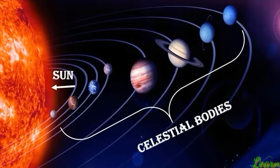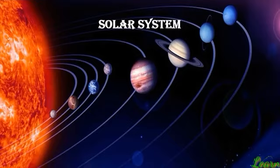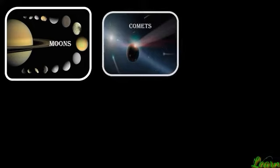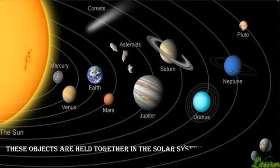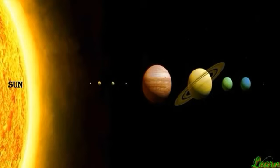The sun and the celestial bodies that move around it form the solar system. It comprises a large number of bodies like planets, their moons, comets, asteroids, and meteorites. These objects are held together in the solar system due to the sun's gravitational pull. The sun is a major source of heat and light for all the planets.